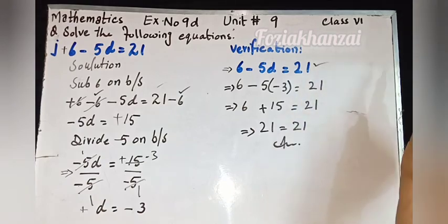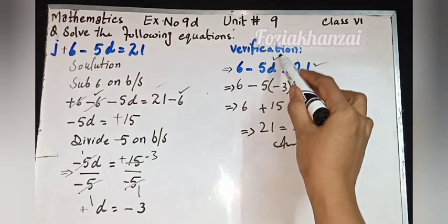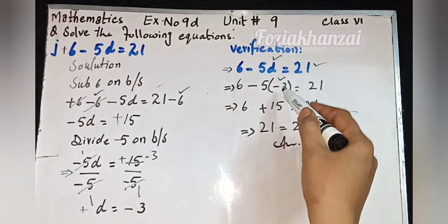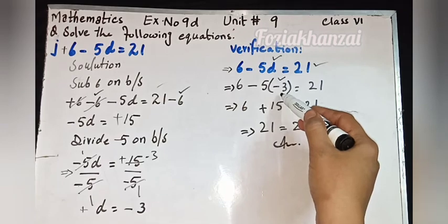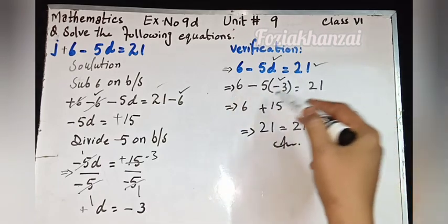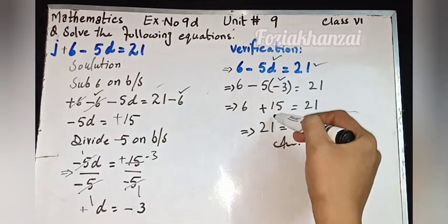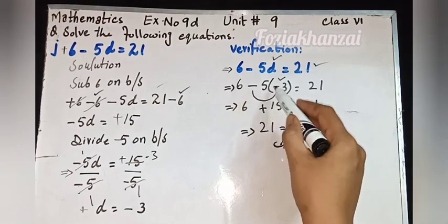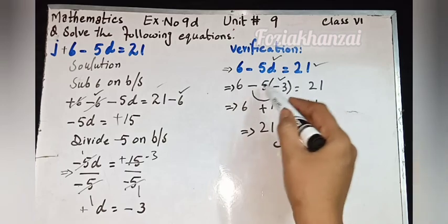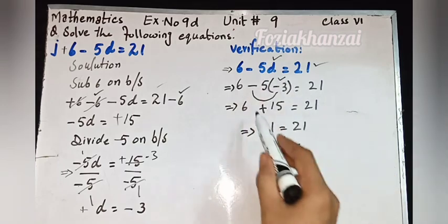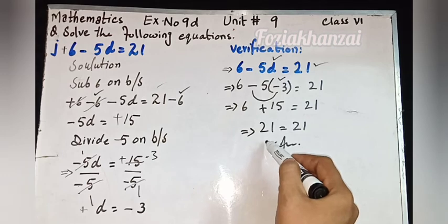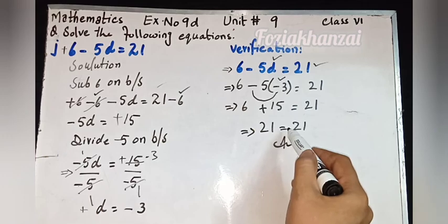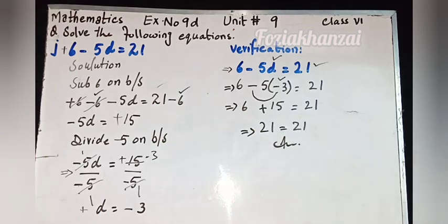Verification: first step copy the question, second step simple replacement of d. We put the value of d. Remaining as it is: 5 times 3 is 15. Minus minus is plus, so plus 15. Plus 6 is equal to 21. Both sides: 21 is equal to 21 — verification is correct.